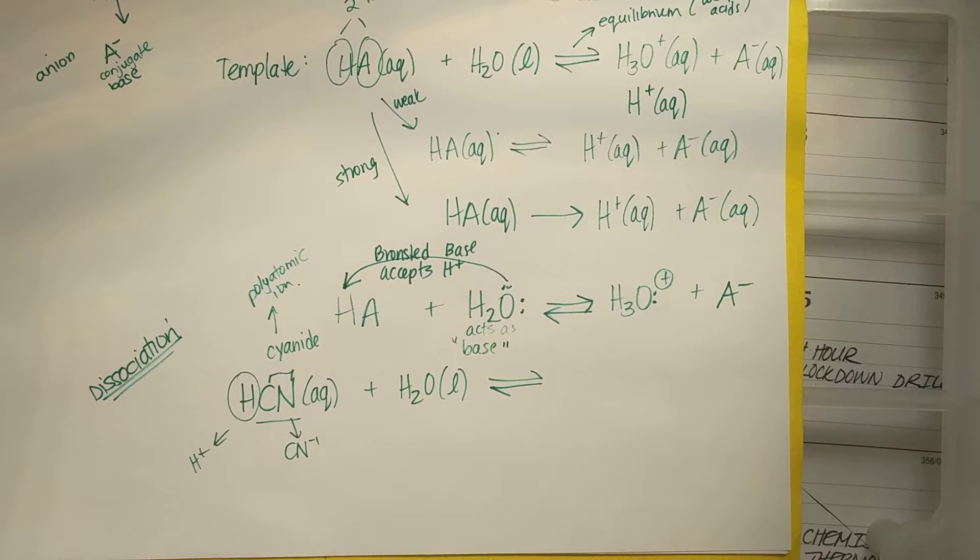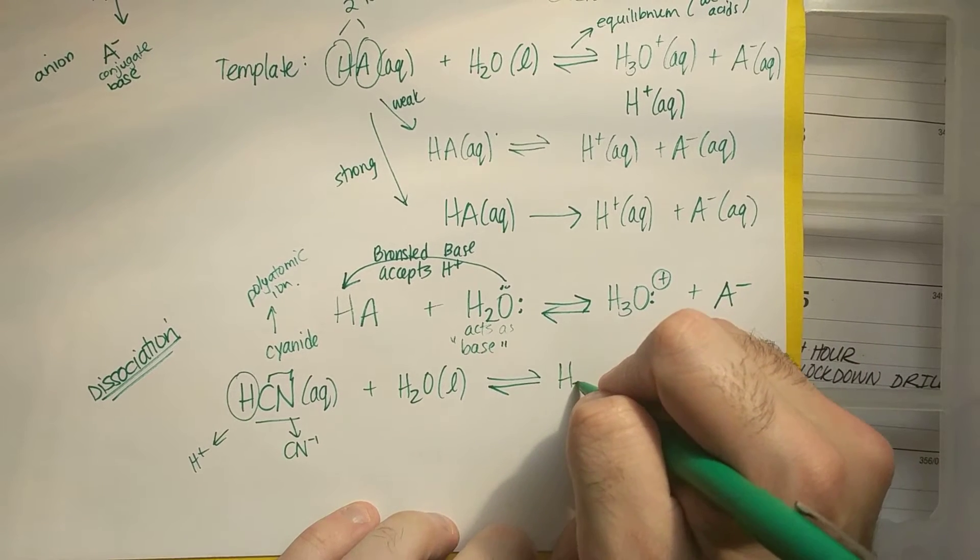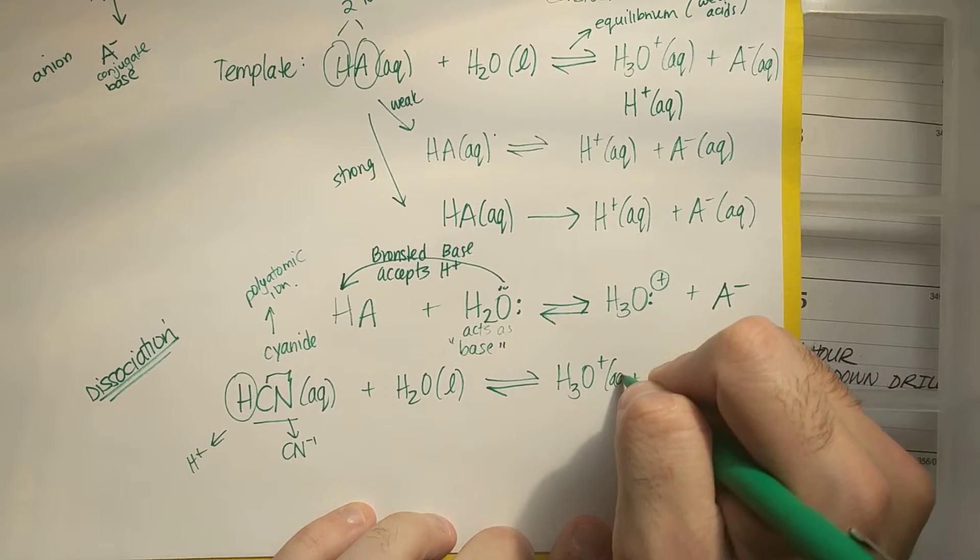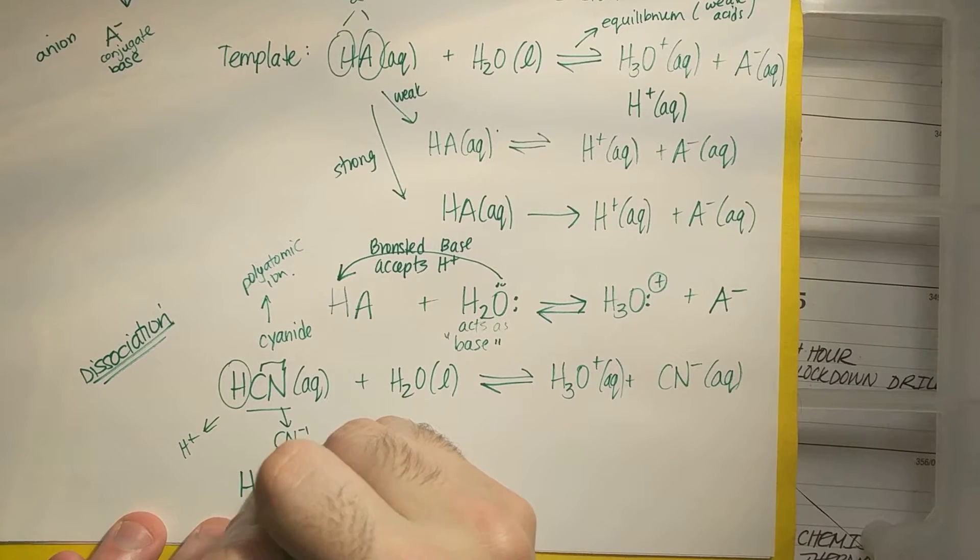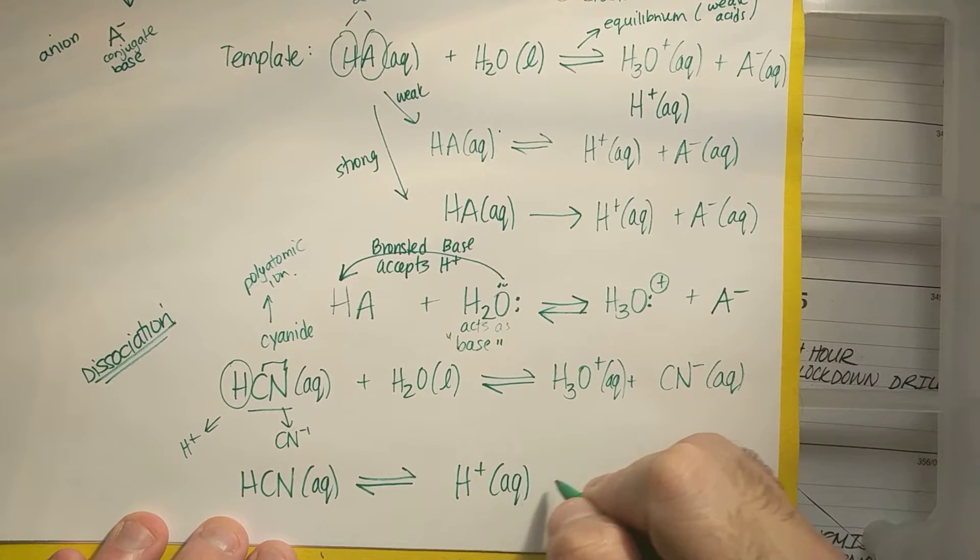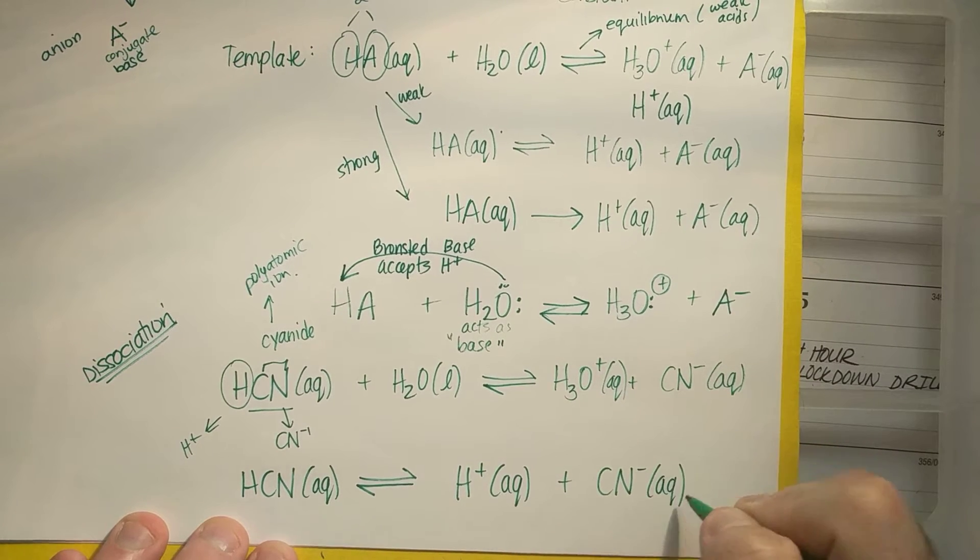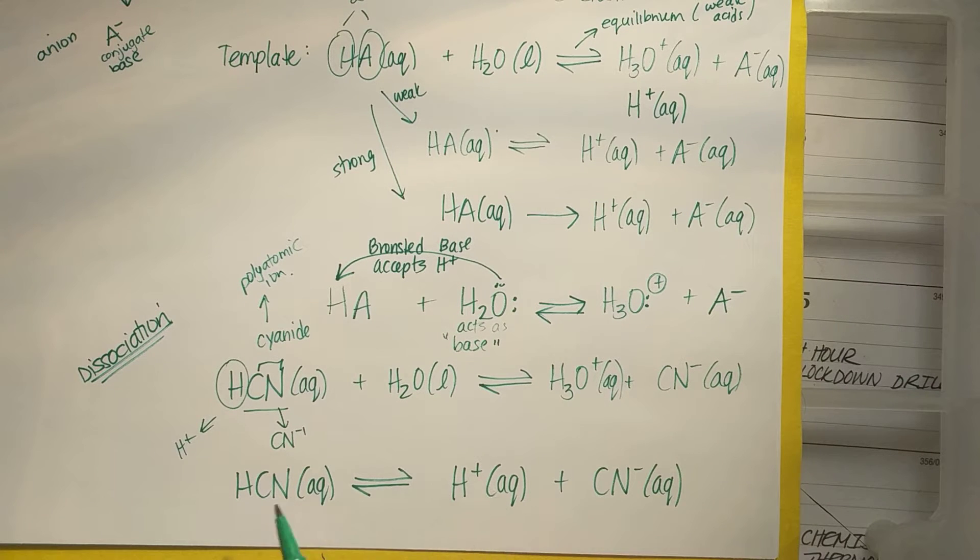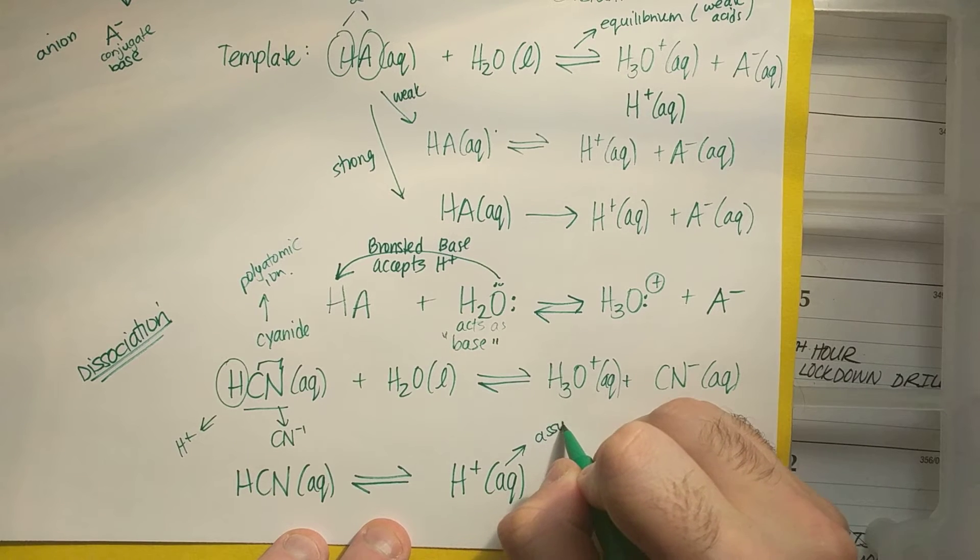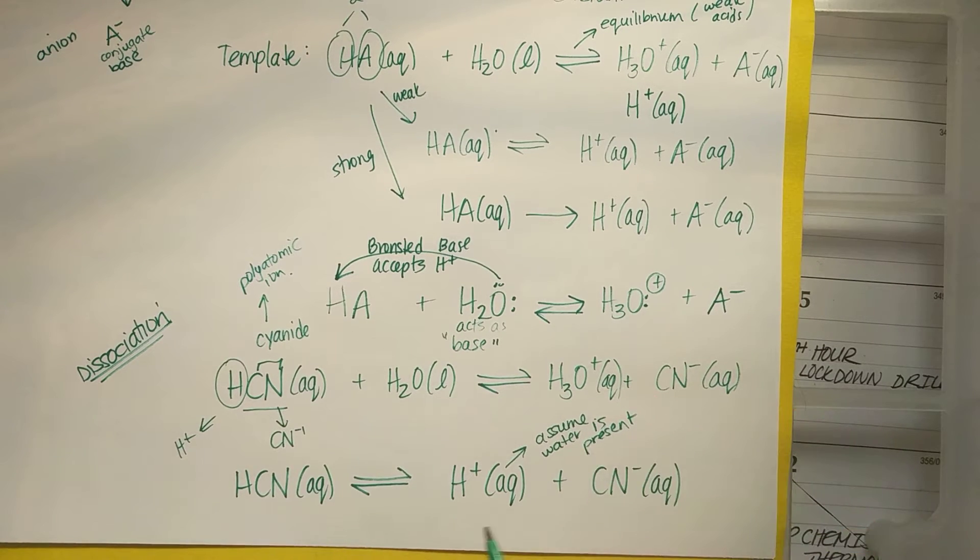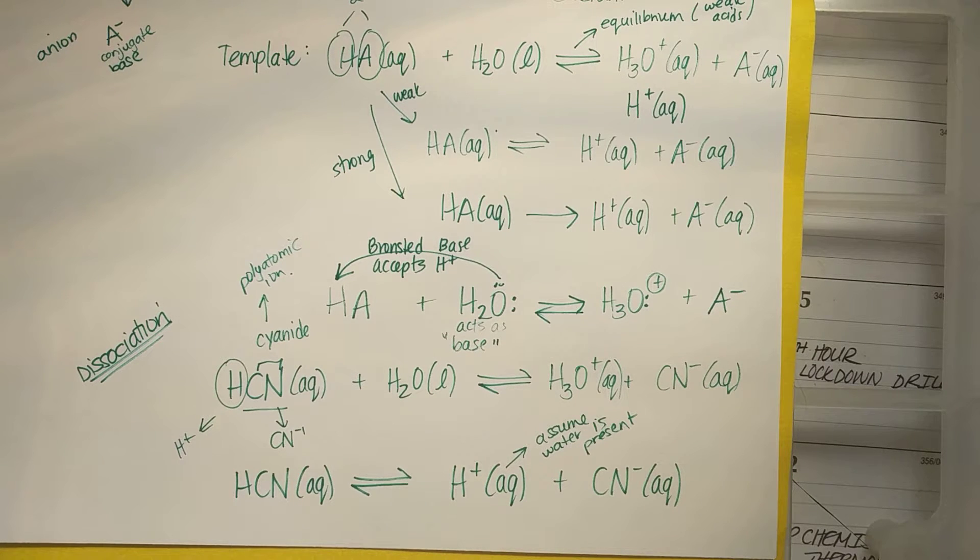And I'm going to do that a second time. So I have H plus and CN minus. And CN is cyanide, which is a polyatomic ion. So again, there's a list of polyatomic ions that you need to know. So if I want to continue writing this, I'll have H3O plus plus CN minus. And they're both aqueous. If I want to do this simpler, I could do HCN aqueous, equilibrium arrows, H plus aqueous, plus CN minus aqueous. And that's okay, because water does not end up in the equilibrium expression and it's assumed to be there with aqueous. Aqueous means assume water is present.